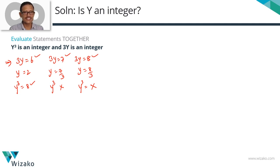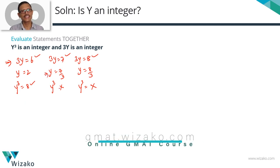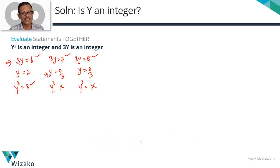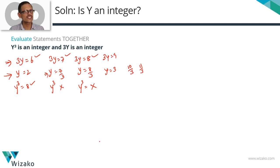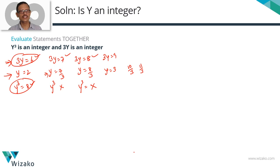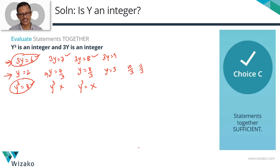If 3y is an integer and y cube is also an integer, the key inference is: if y is not an integer, y cube cannot be an integer. So for both conditions to hold simultaneously, y must be an integer. Taking consecutive values — when 3y equals 9, y is 3 (integer); 10 over 3 gives non-integer y cube; 11 over 3 gives non-integer y cube — the pattern repeats. The only case where y cube is an integer is when y is an integer. Therefore, combining both statements, we can conclusively say y is an integer. The answer is C.